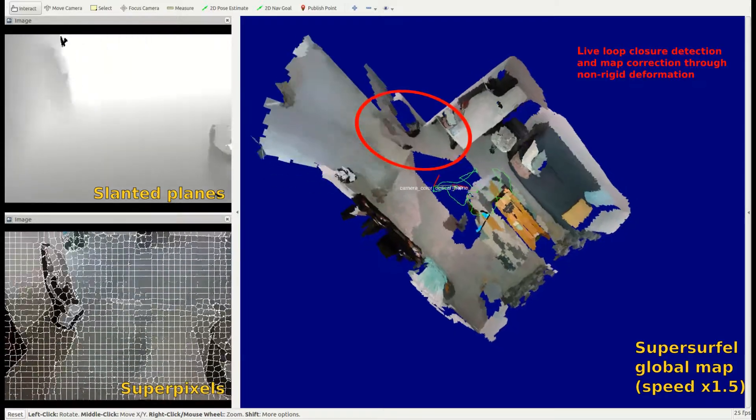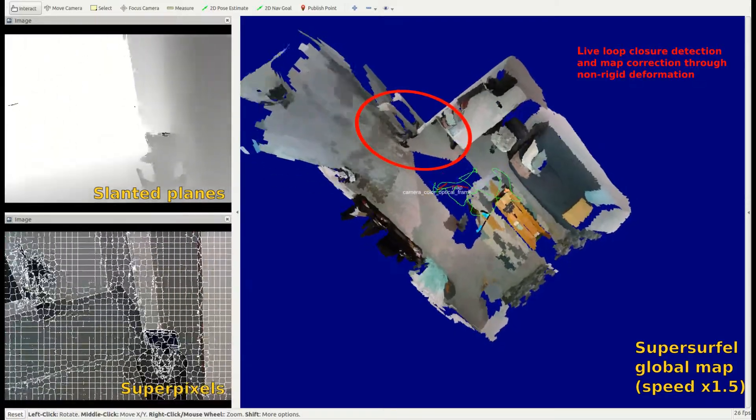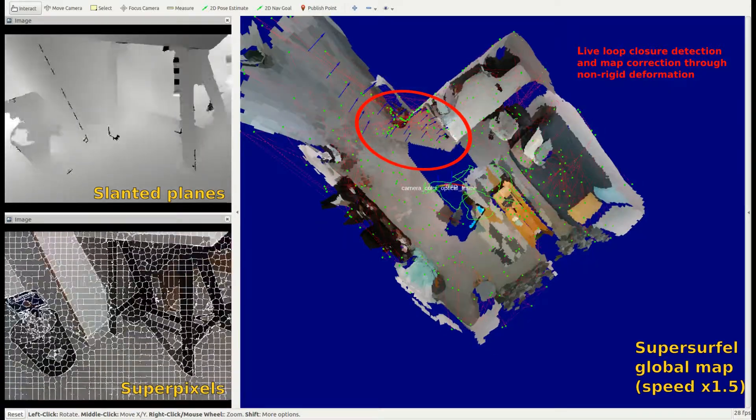Here you can see that the global mapping consistencies are corrected upon loop closure detection through non-rigid deformation.